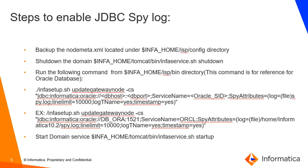Steps to enable JDBC spy log: Before making any changes, please take a backup of the node.xml file, which is located under the INFA_HOME/isp/config directory. Then shut down the node, as it is mandatory to do so before running this command. Then go to the INFA_HOME/isp/bin directory and run the infosetup.sh update gateway node command with the INFA_CS option.